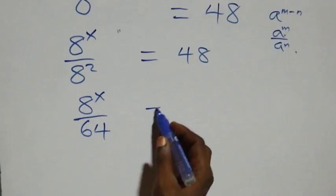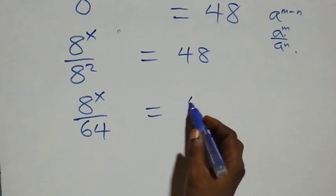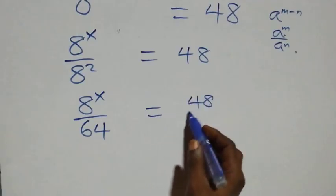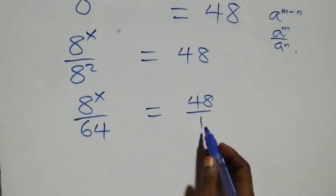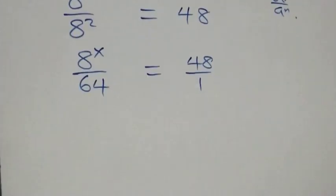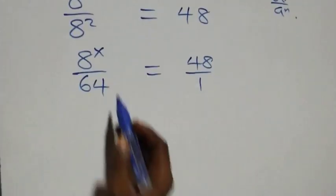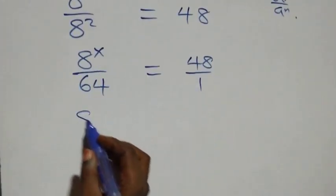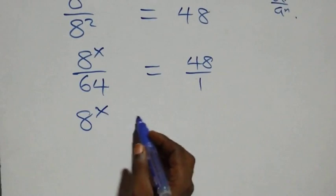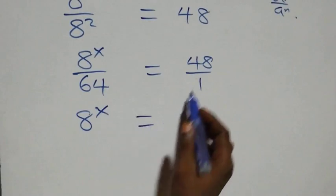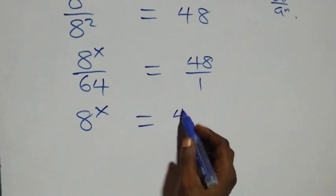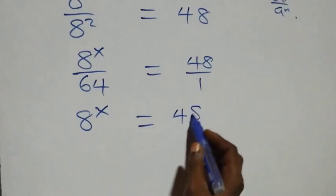We have eight raised to power x over sixty-four equals forty-eight over one. When we cross-multiply, eight raised to power x equals forty-eight times sixty-four.